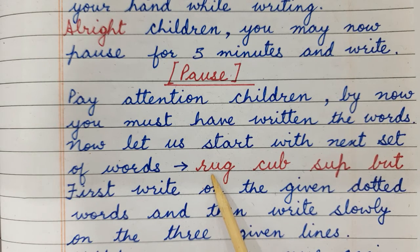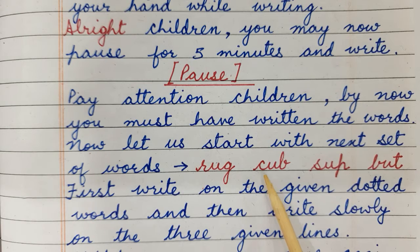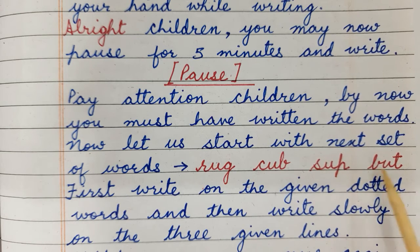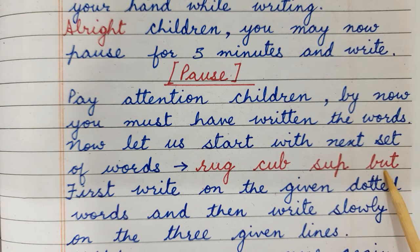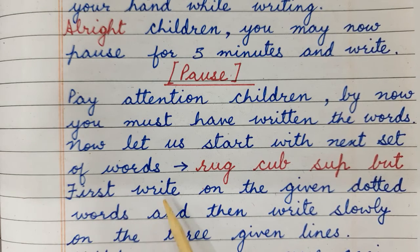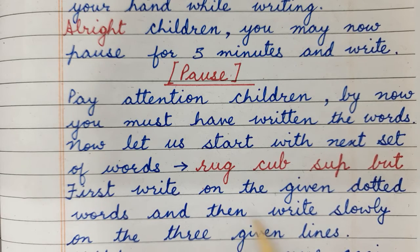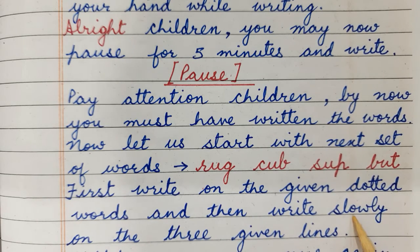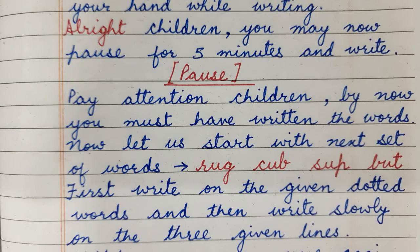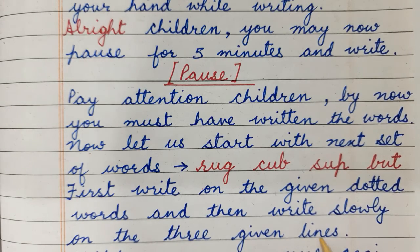Rug, cub, suck, bug. First, write on the given dotted words and then write slowly on the 3 given lines.